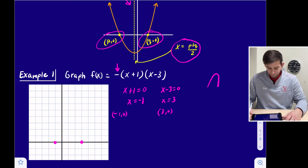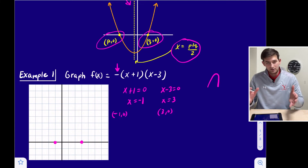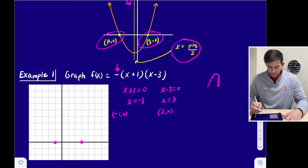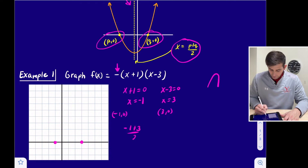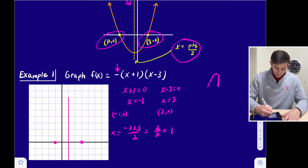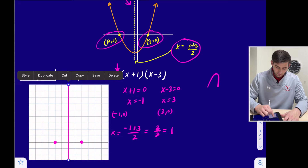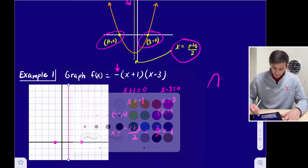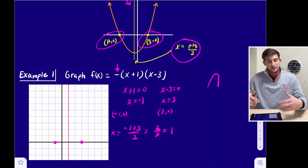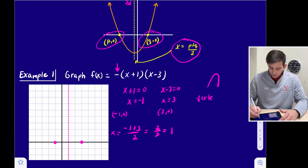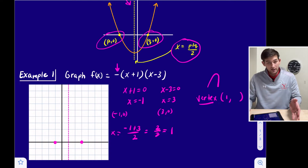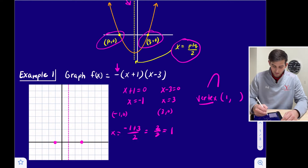Now we can find the axis of symmetry because it's located halfway between those two points. We do (−1 + 3) / 2: negative 1 plus 3 is 2, divided by 2 gives us 1. So the axis of symmetry is x = 1, which is this vertical dashed line right here. Now to find our vertex, we know the x-coordinate is 1 from our axis of symmetry, so we plug 1 into our original equation.